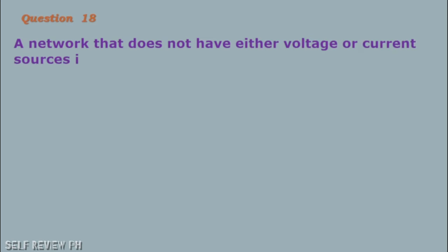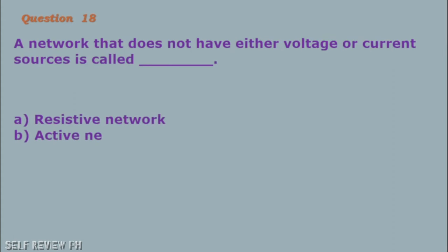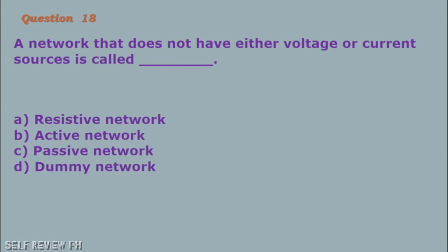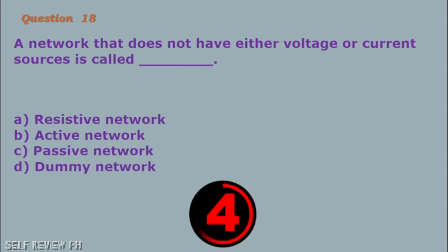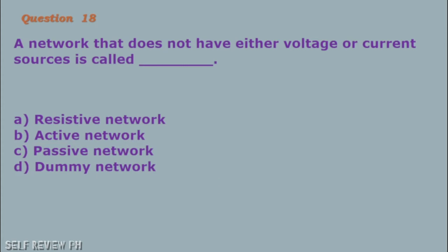Question number 18: A network that does not have either voltage or current sources is called blank. A. Resistive network B. Active network C. Passive network D. Dummy network. The correct answer is letter C, passive network.